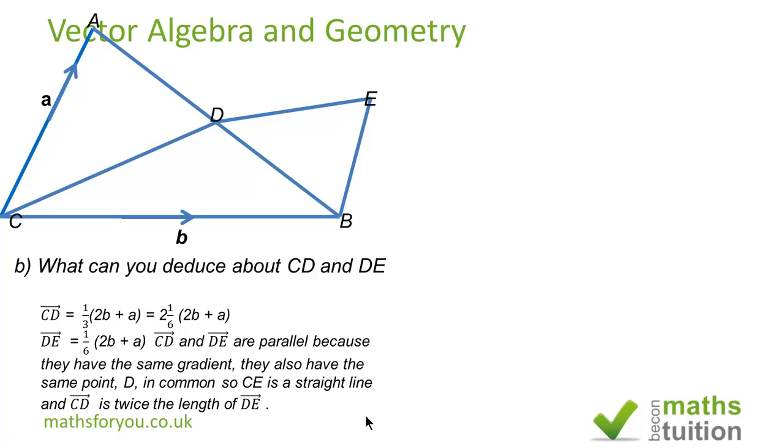Furthermore because CD is 2 into 1 sixth (2b plus a) and DE is 1 sixth into (2b plus a), it means that CD is twice DE and the ratio of CD to DE is 2 to 1.